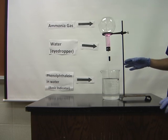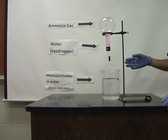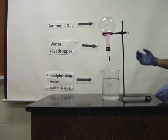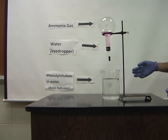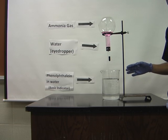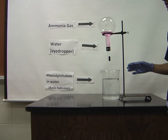And so what is happening is the ammonia gas dissolves in water. Ammonia is NH3, and it reacts with the water to form ammonium and the hydroxide ion. Ammonium is NH4+ and hydroxide is OH-.